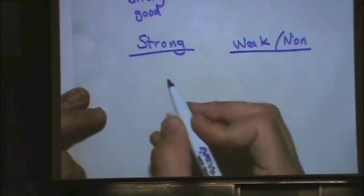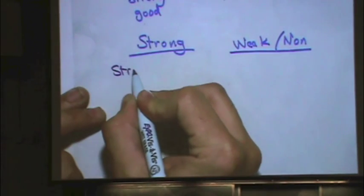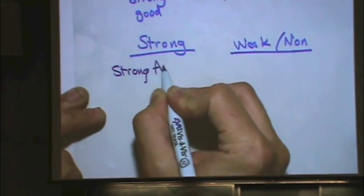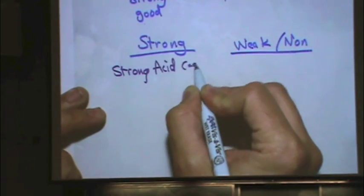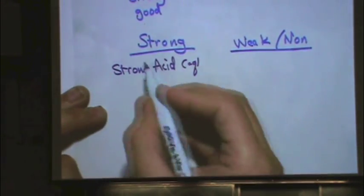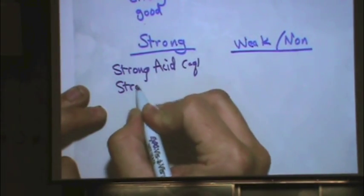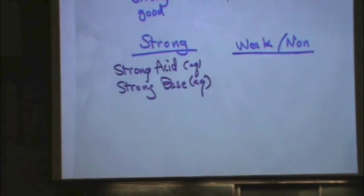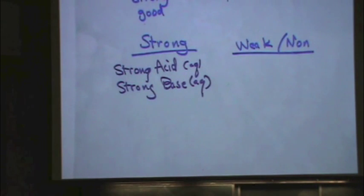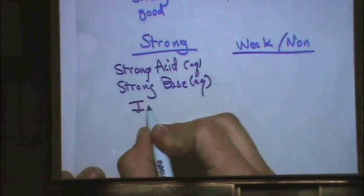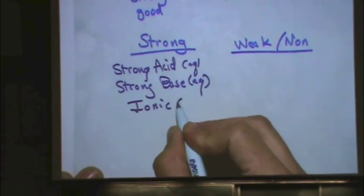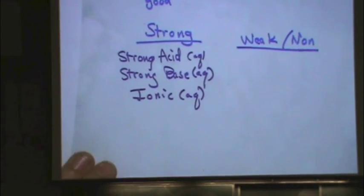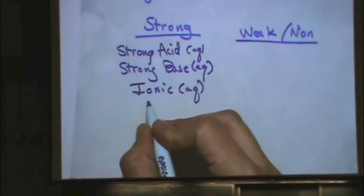Good that you asked. I'm going to make a strong category and then a weak/non-electrolytes. So strong electrolytes or weak/non-electrolytes. Let's do the strong first. What's a strong electrolyte? Well, a strong acid, if it's aqueous. A strong base, again, if it's aqueous. You can have a strong base that's solid. That would not be a strong electrolyte. So specifically an aqueous strong base. Something that's ionic, again, if it's aqueous.